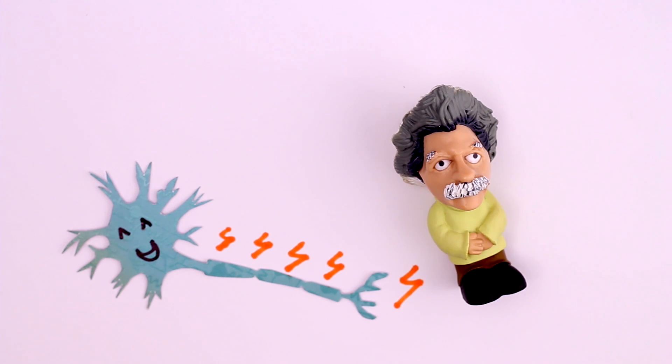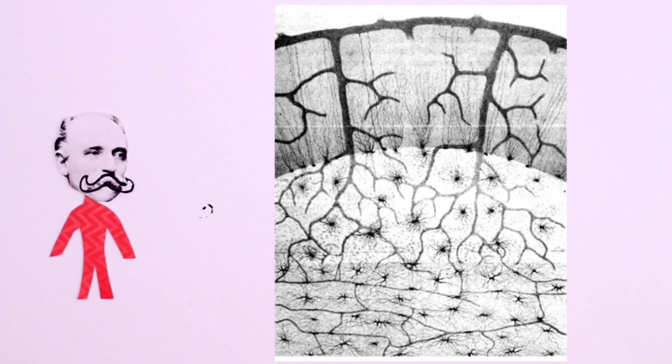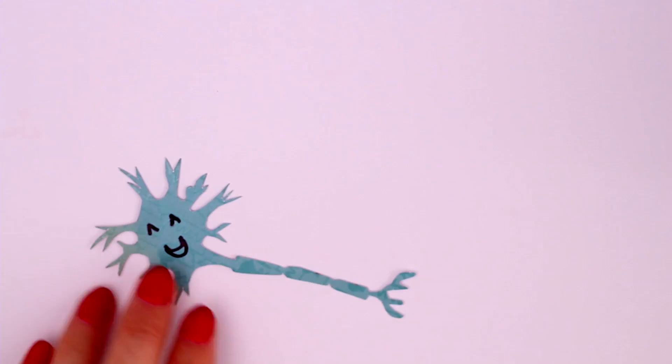With Golgi's staining technique, we could see that glia were much smaller and clustered around neurons. They appeared to insulate neurons and provide structural support. In fact, that's how they got their name.